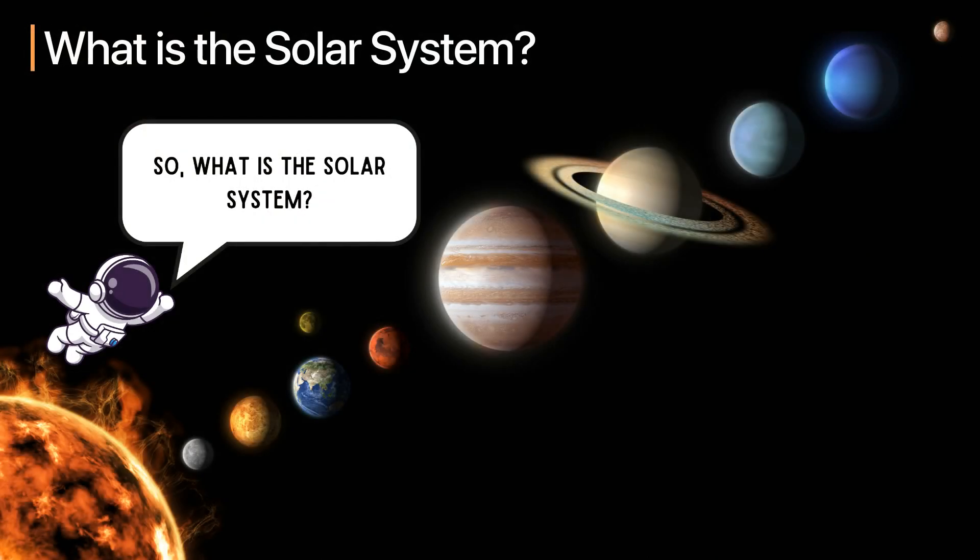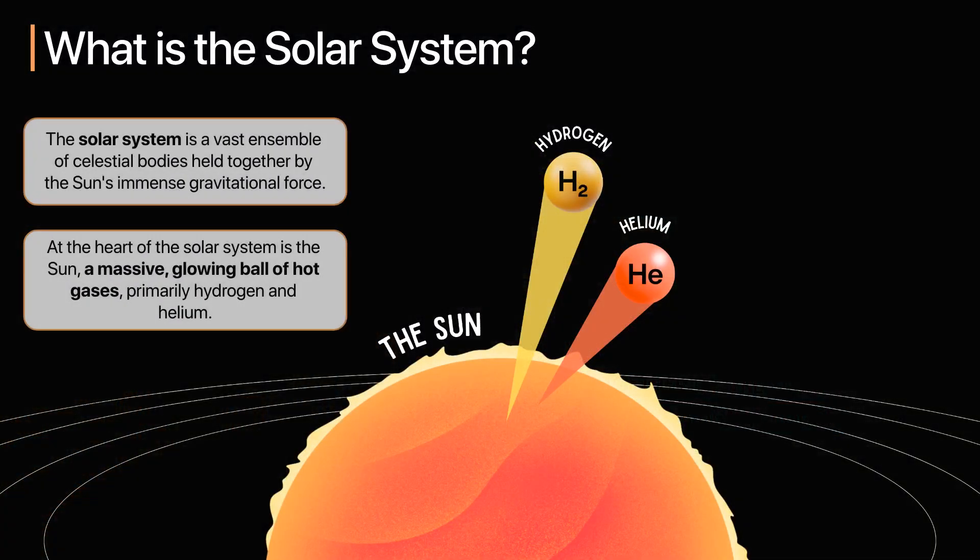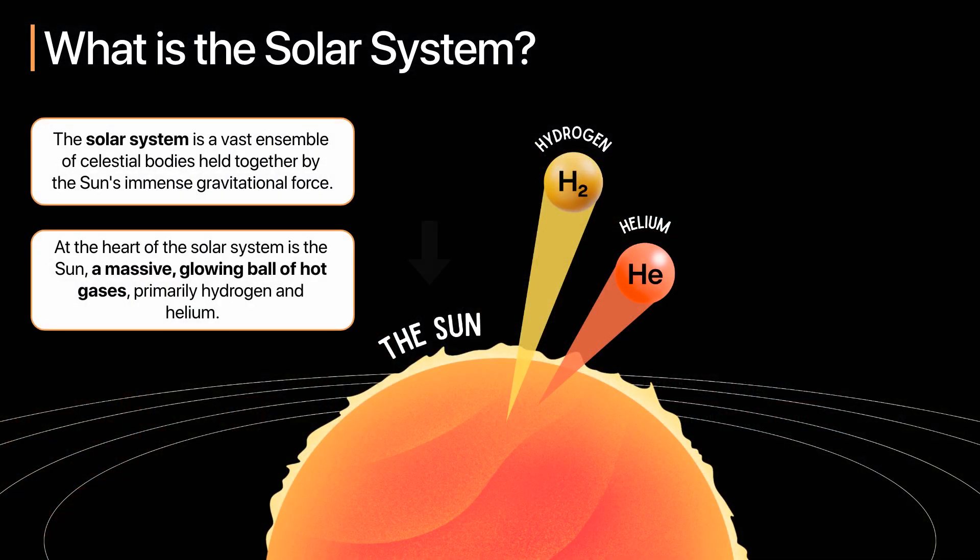So what is the solar system? The solar system is a vast ensemble of celestial bodies held together by the Sun's immense gravitational force. At the heart of our solar system is the Sun, a massive glowing ball of hot gases, primarily hydrogen and helium.